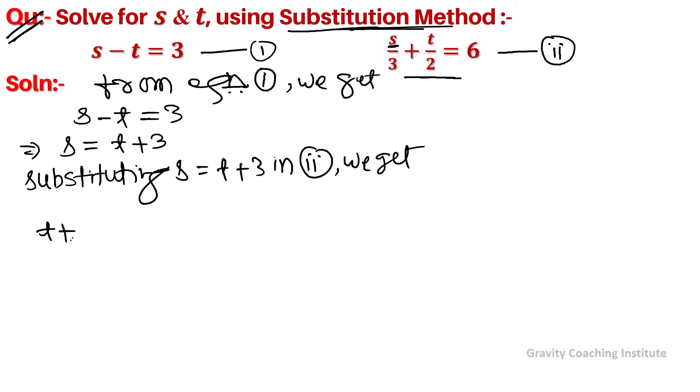So we have (t + 3)/3 + t/2 = 6. We'll take the LCM.